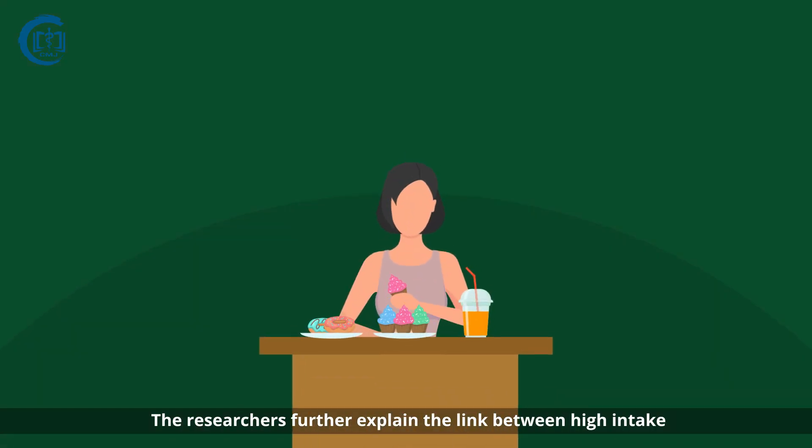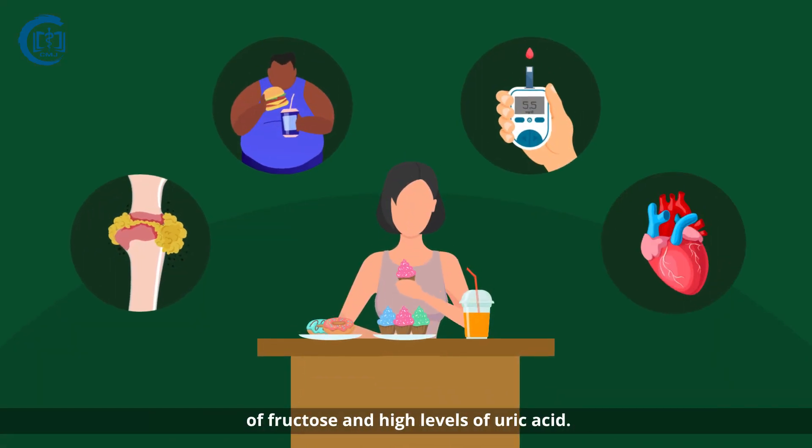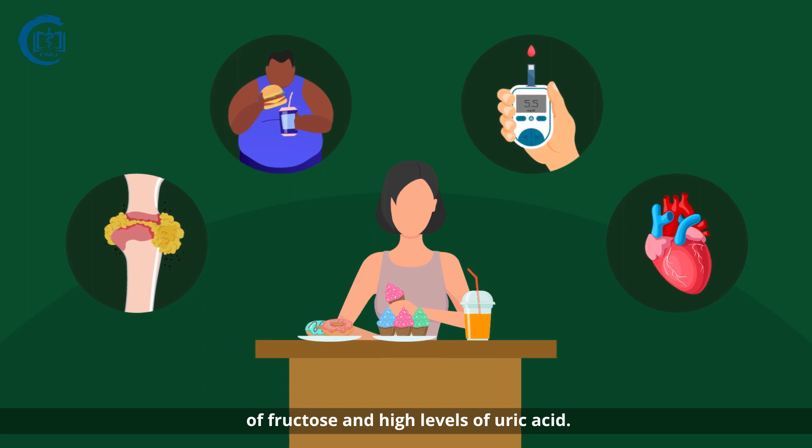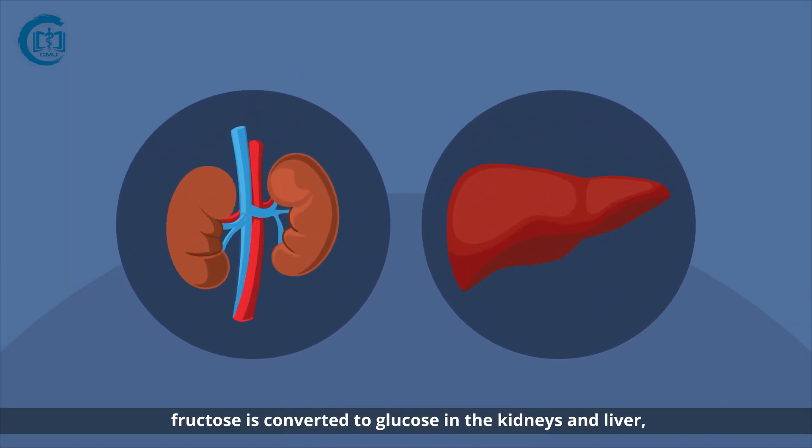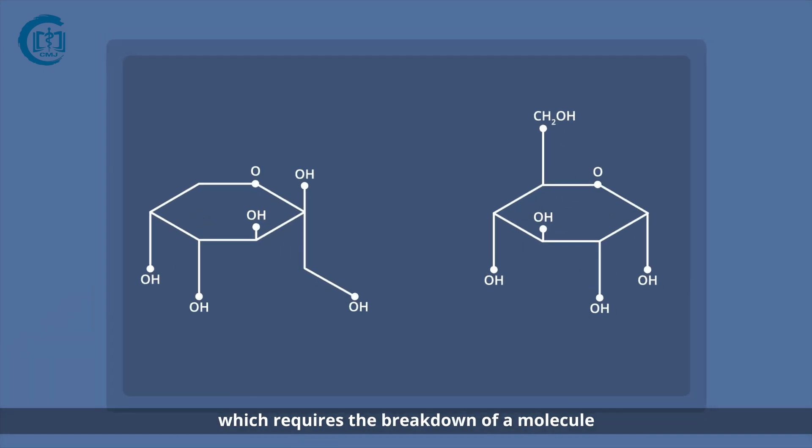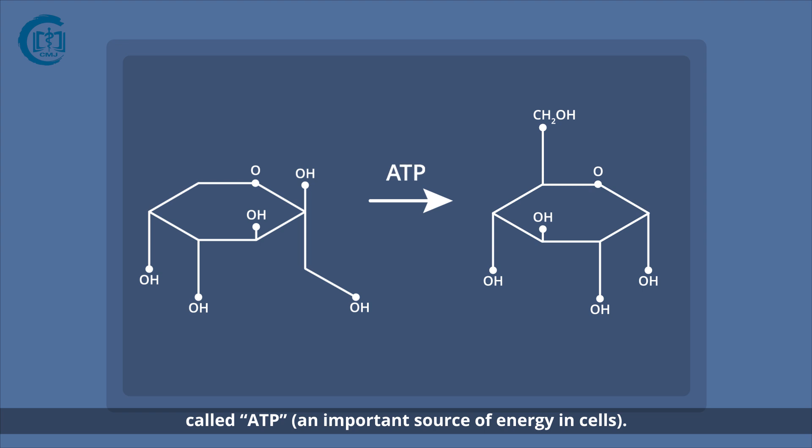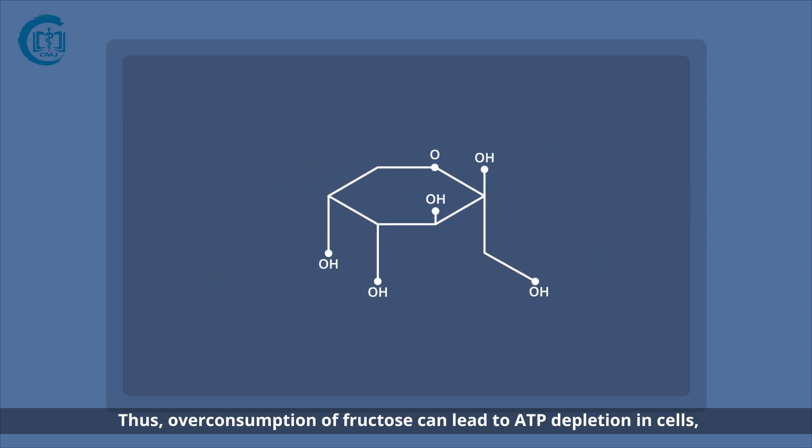The researchers further explain the link between high intake of fructose and high levels of uric acid. When fructose enters circulation, it is converted to glucose in the kidneys and liver, which requires the breakdown of a molecule called ATP, an important source of energy in cells.